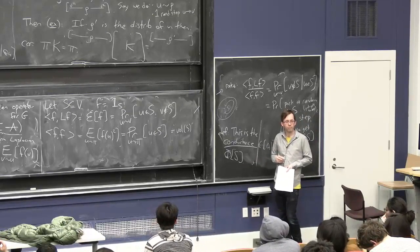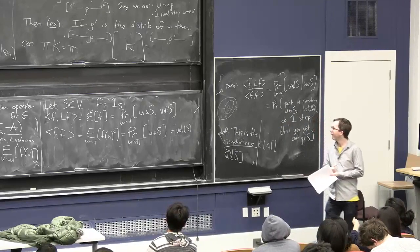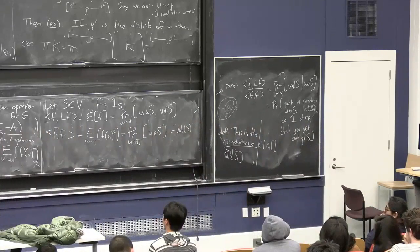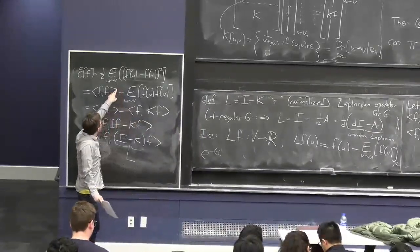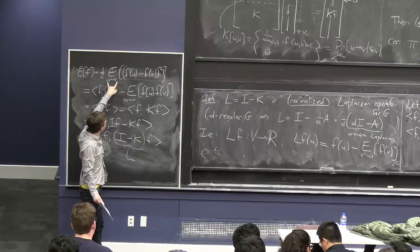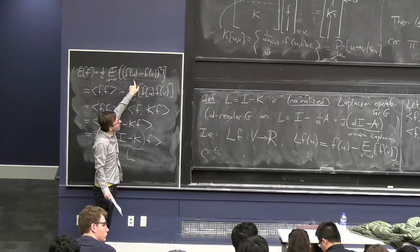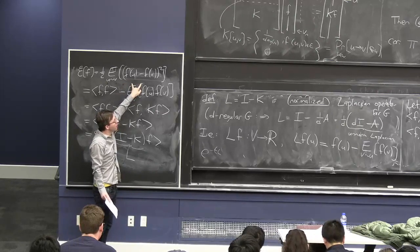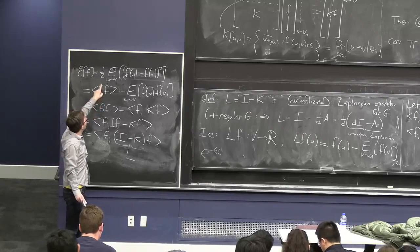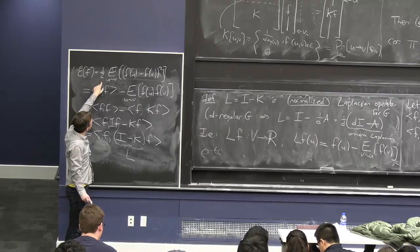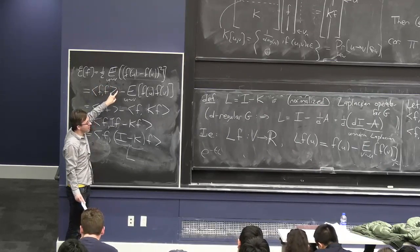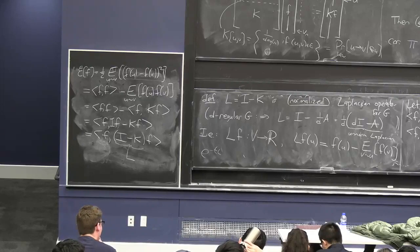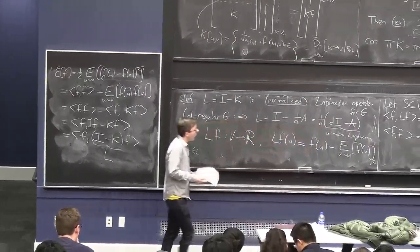If f is the indicator of a set S, so f values are either 0 or 1, and you pick a random edge: if the two endpoints are both in the set or both outside, you get 0. If one's in the set and one's outside, the squared difference is 1, and you count a half. So it's half the probability that a random edge has one vertex inside and one vertex outside — equivalently, the probability that the first vertex is inside and the second is outside.